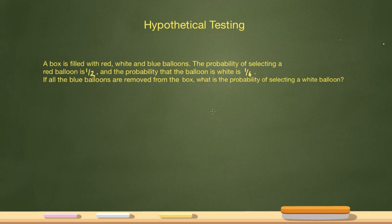The probability that the balloon is white is one-sixth. Now the question is saying, if all the blue balloons are removed from the box, what is the probability of selecting a white balloon? Throughout this problem, it never tells me the number of balloons in this box. And that's when hypothetical testing comes in.